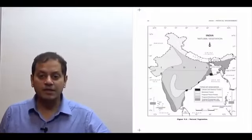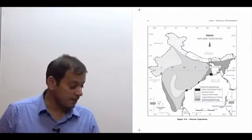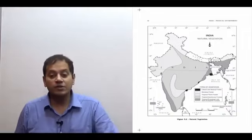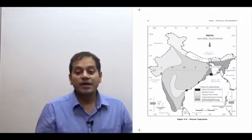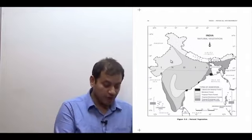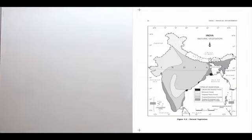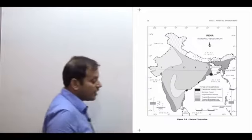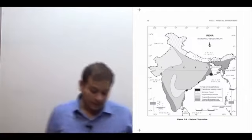I will start by repeating what we did in the previous lecture. Natural vegetation in India consists of: tropical evergreen and semi-evergreen forest; tropical deciduous forest, which includes dry deciduous and moist deciduous; tropical thorn forest; mountain forest; and littoral and swamp forest. This is the general idea for natural vegetation in India.